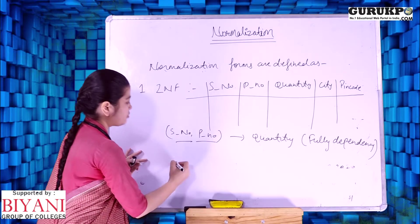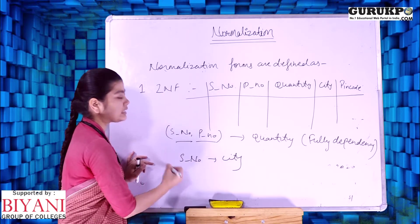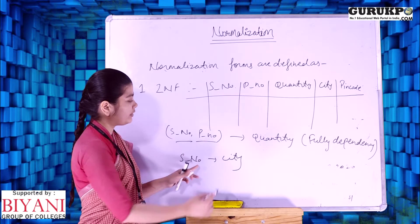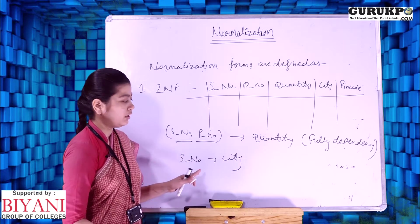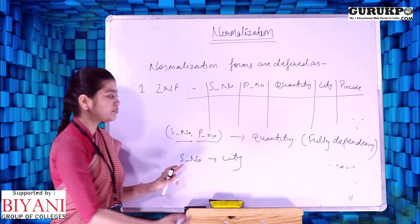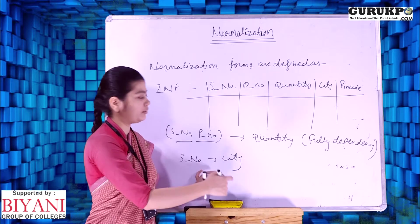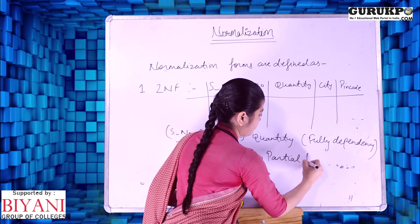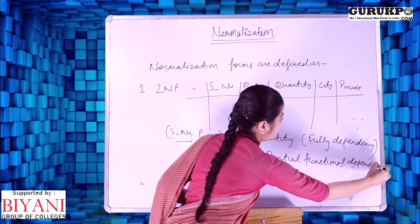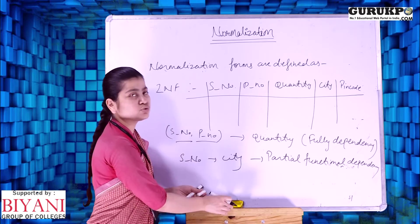Now let's talk about the city column. We can identify city using only the serial number — there is no requirement for predict number to find city. City is identified by serial number alone, so city is not dependent on predict number. Therefore, there is a partial functional dependency because city depends only on serial number, not on the full composite key.